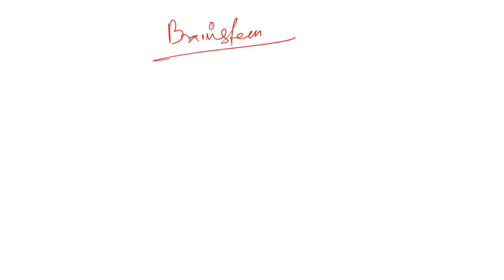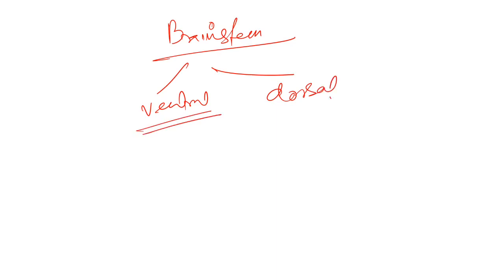Hello everyone, welcome to the class. Now we will be discussing the brainstem. There are two aspects of the brainstem: the ventral aspect and the dorsal aspect. We will be talking about the ventral aspect of the brainstem.